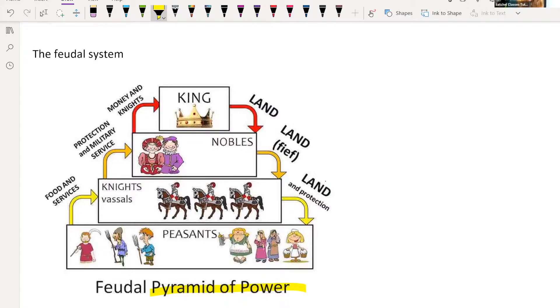So right at the top, we've got the king. If you want to take it one step further, the person above the king is God. So you've got God, you've got nobles, you've got knights, and then you've got the peasants. The idea is that everybody in the feudal system gives something to the next ring down and gets something from them as well. The king gives land to the nobles, and in return gets money and knights. The nobles give land to the knights, and in return get military protection and service. And the knights give land and protection to the peasants, and in return they get food and services.